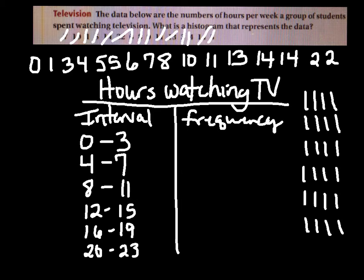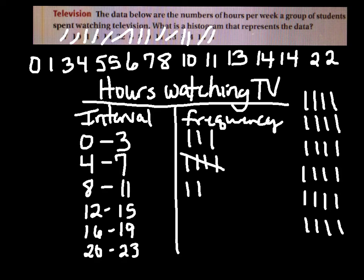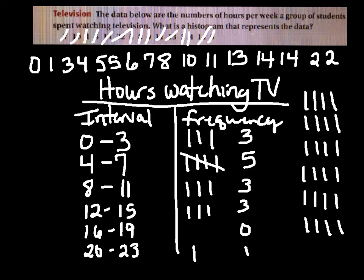Sometimes the intervals don't work out exactly. Next, I'm going to write tally marks in the frequency column. We have a zero, a one, a three, a four, two fives, a six, and a seven — make sure your fifth tally mark crosses over. Then eight, ten, eleven, thirteen, fourteen, fourteen. The 16–19 interval has nothing in it. And then I have a twenty-two. Totaling up: that's three, five, three, three, zero, and one. That's our frequency table for watching TV.